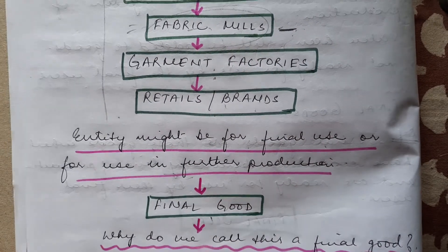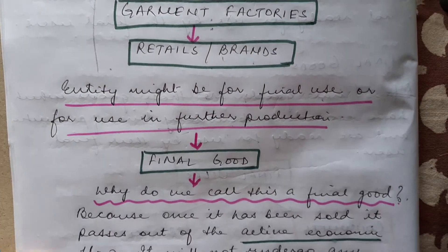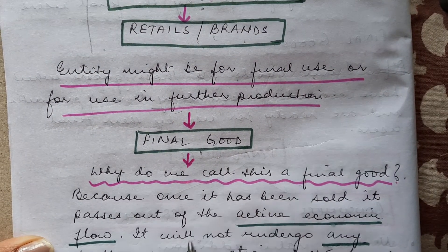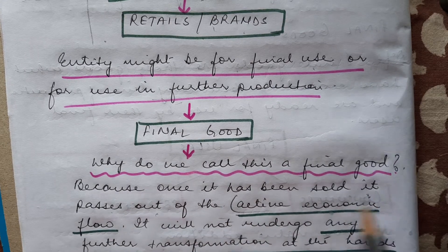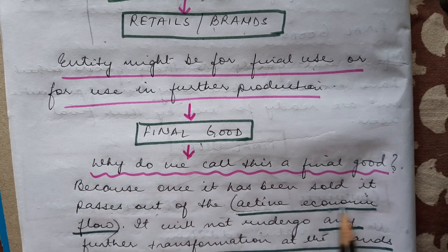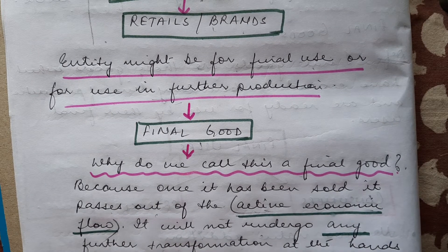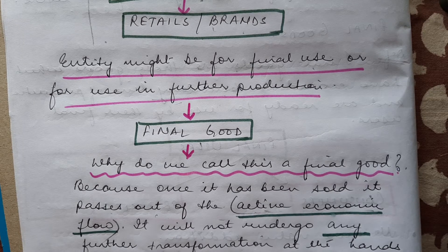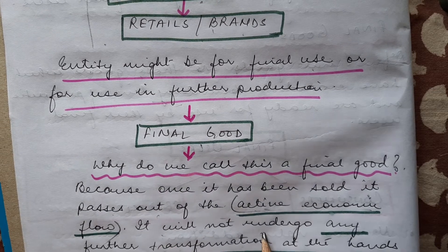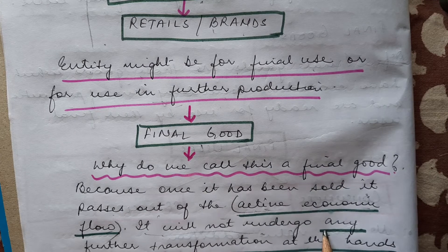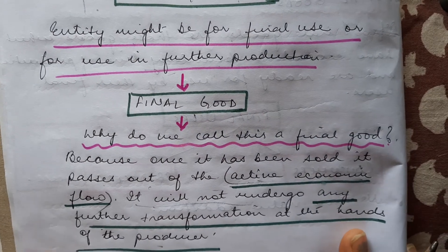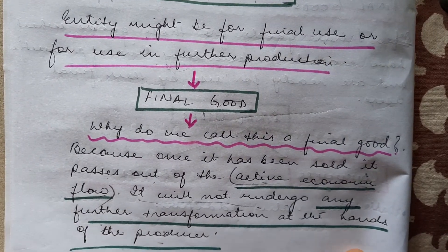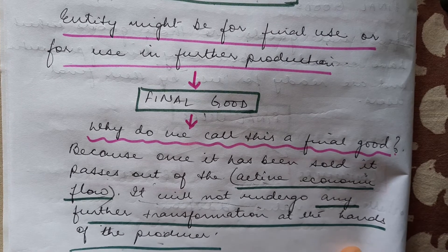So where we stop determines whether something is a final good or not. We call a good a final good because it has been sold and passes out of the active economic flow — it is no more under the production process. When a good comes out of the production process and no more value is being added to it, we call it a final good. It will not undergo any further transformation at the hands of producers.